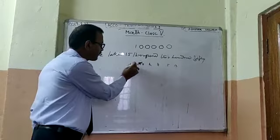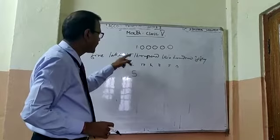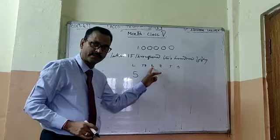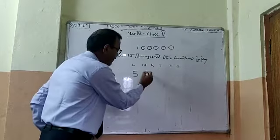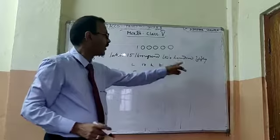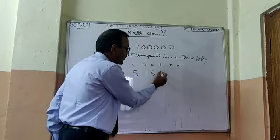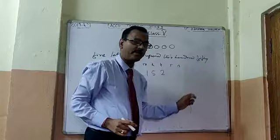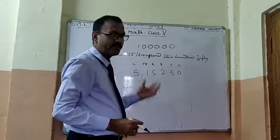Then five lakhs — replace lakh place with five. Here is the five. Now fifteen thousand: ones, tens, hundreds, thousands — it is fifteen, so you write one, five. Fifteen. Now two hundred: ones, tens, hundreds — so it takes the two. Now last is fifty: five, zero. This is an easy process.